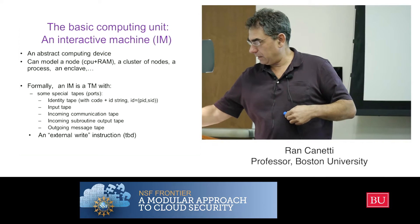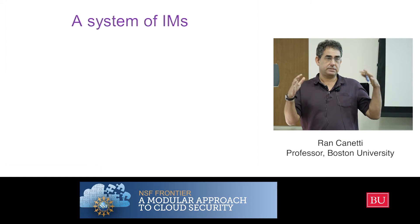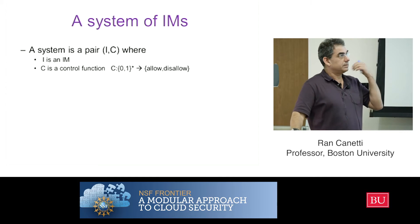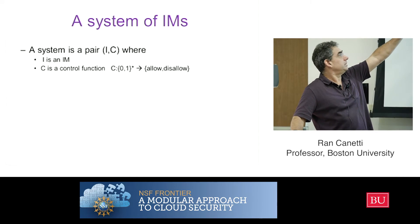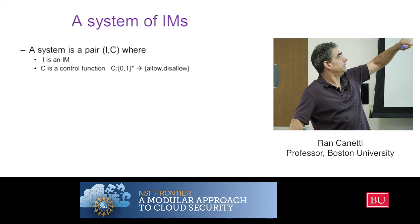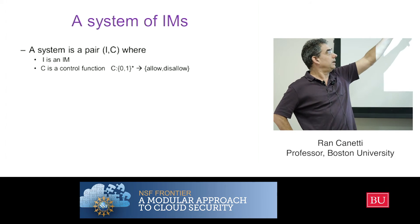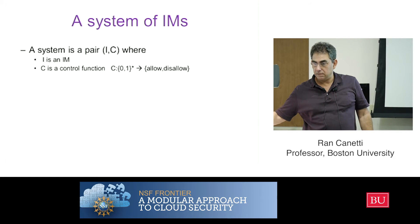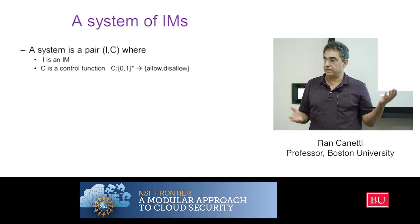So that's the unit. Now I want to talk about a system of interactive machines — how these machines compute together and interact. I'm going to describe it very abstractly. A system is a pair right now: it's an interactive machine, the initial machine, and C, which I call a control function. The control function is going to be a function from execution prefixes to allow or disallow. We'll see in a minute what it does.